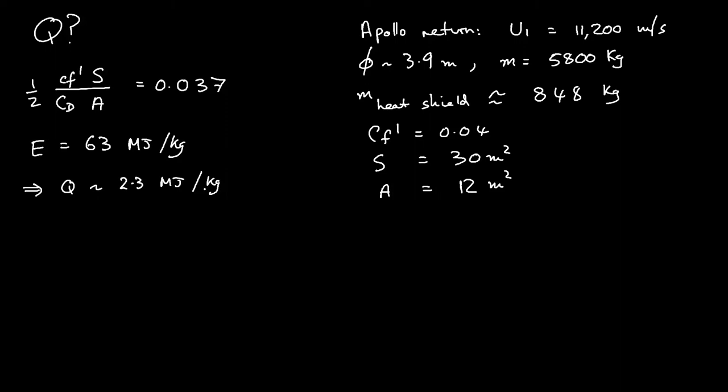It's much bigger than anything can store through sensible heat or latent heat if you're using phase change to try and cool your vehicle. But actually it's even worse than that, because that is per kilogram of the whole vehicle. We're trying to dump all this through a heat shield. So if you find out how much is being rejected per kilogram of heat shield, Q is equal to 2.3 times 5800 over 848, which is of the order of 16 megajoules per kilogram of heat shield mass. So that's a big number. We've got to do something about it. We've got to find a way of getting rid of it.